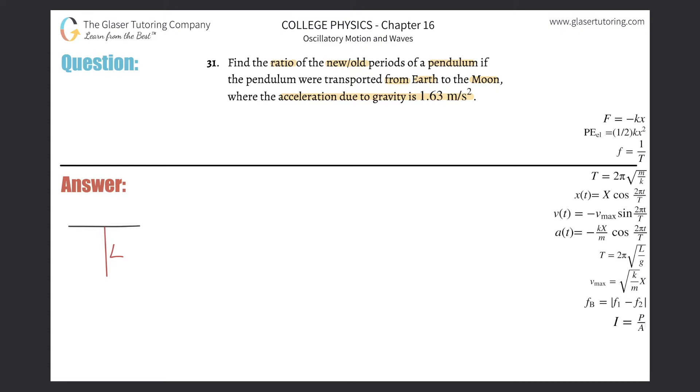So basically, in order for me to relate the two together, the new versus the old, I know I have to find out what's constant between the new and the old. And the constant is going to be the length of the pendulum.